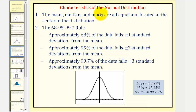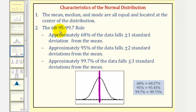Now let's talk about the characteristics of the normal distribution. Number one: the mean, median, and mode are all equal and located at the center of the distribution, highlighted here. Next, the distribution follows the empirical rule, also called the 68-95-99.7 rule, which means approximately 68% of the data follows plus or minus one standard deviation from the mean.